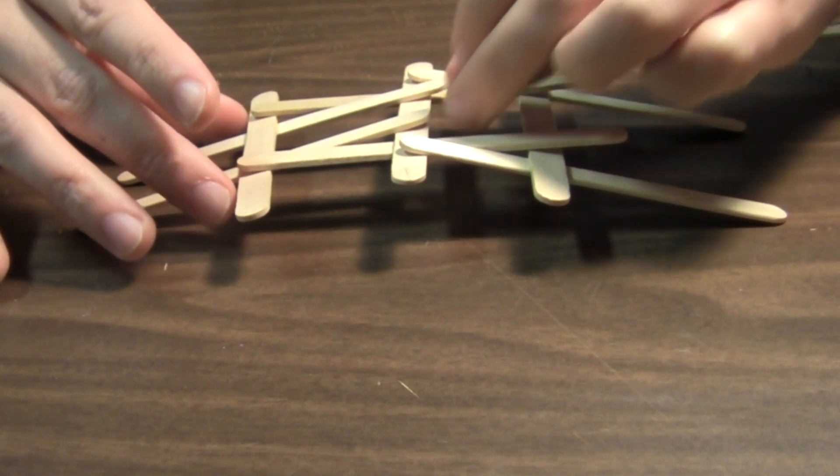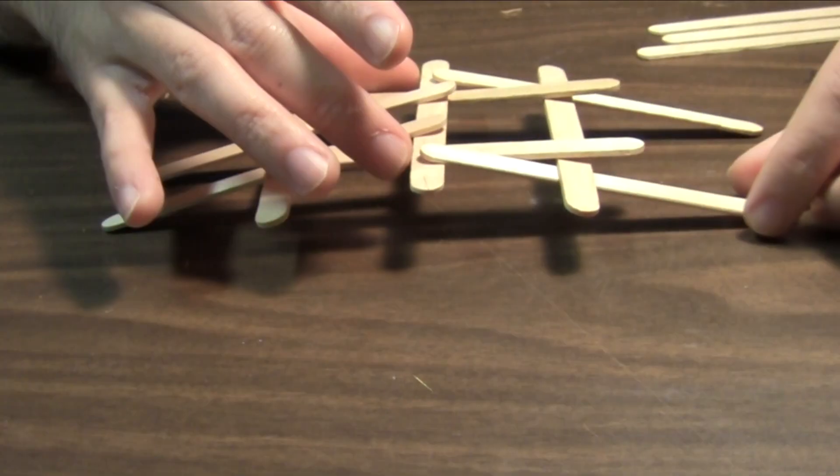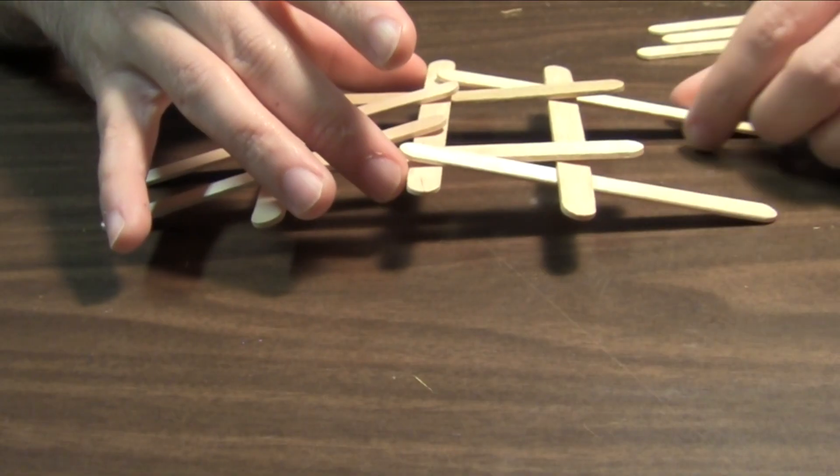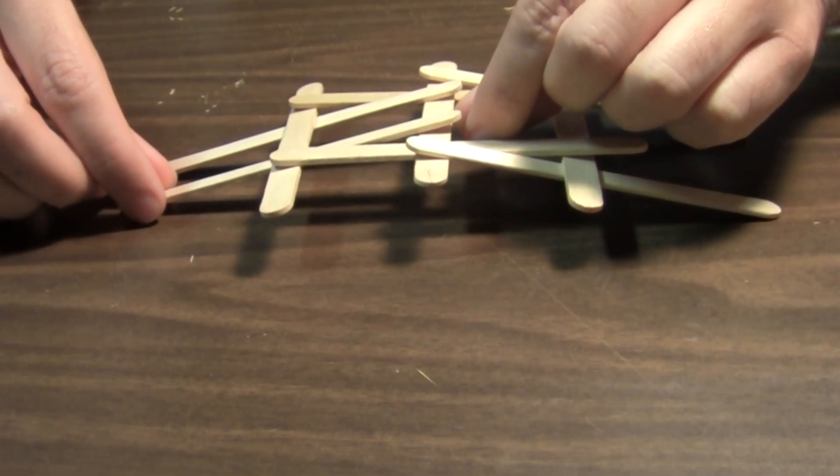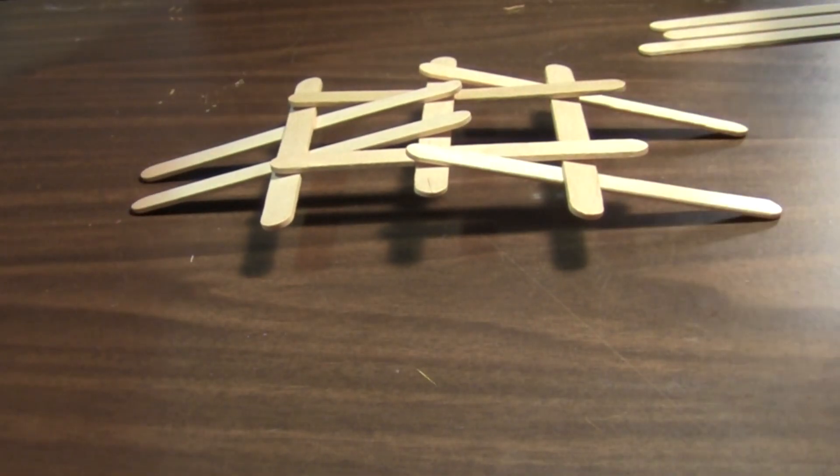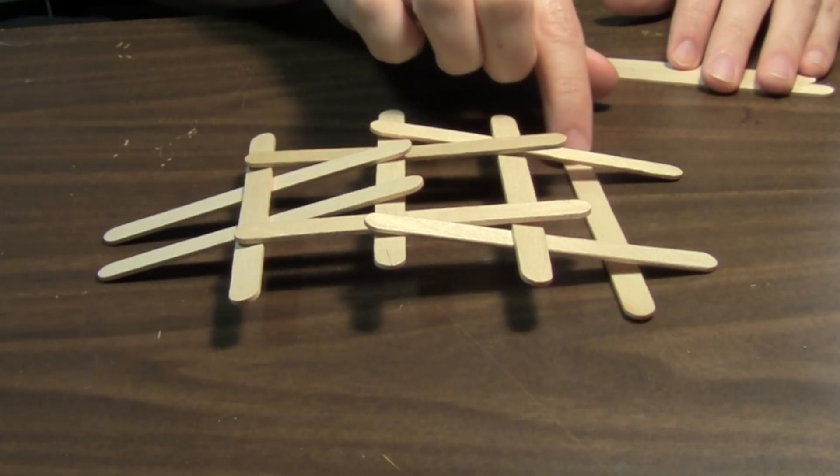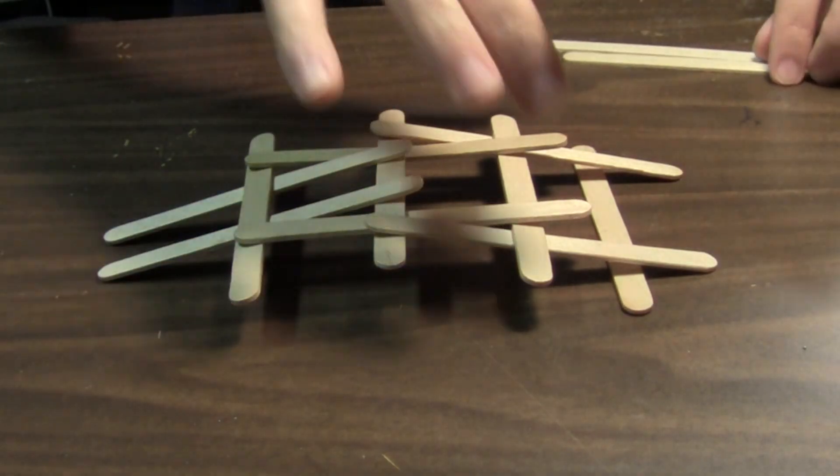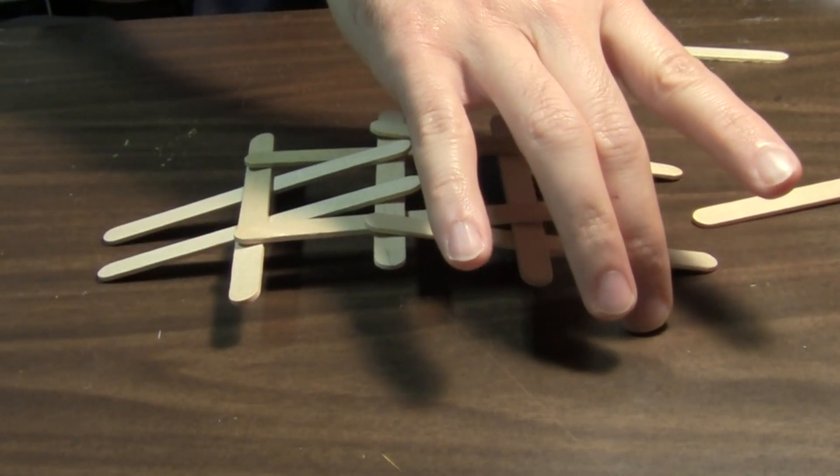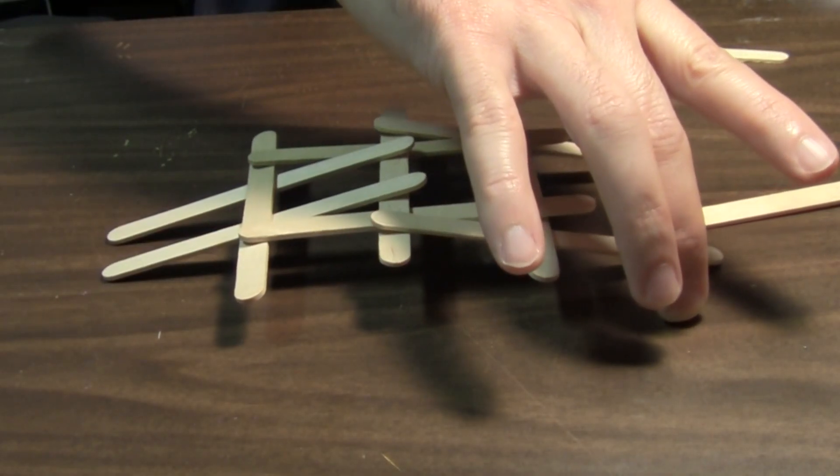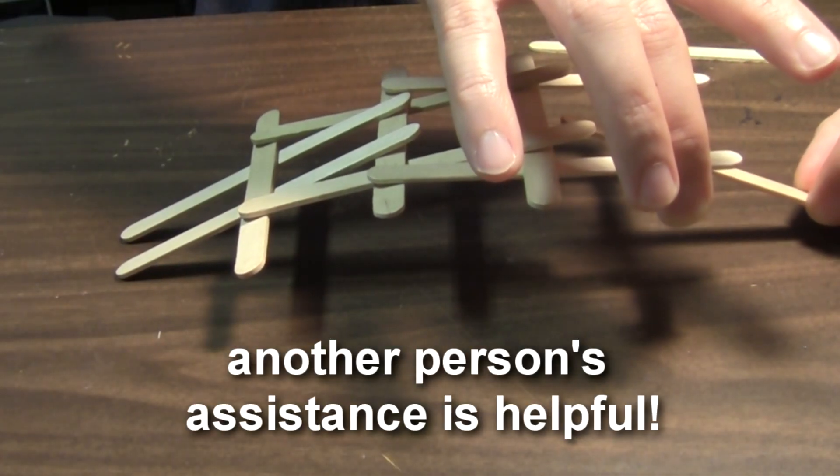I usually try and straighten everything out in between each addition of a new H just to make sure none of the sticks are on the edge of falling out. So we're at nine popsicle sticks now and I'll add one more H. So again put a new crossbeam in and then carefully pick up the whole structure and slide in the final two legs.